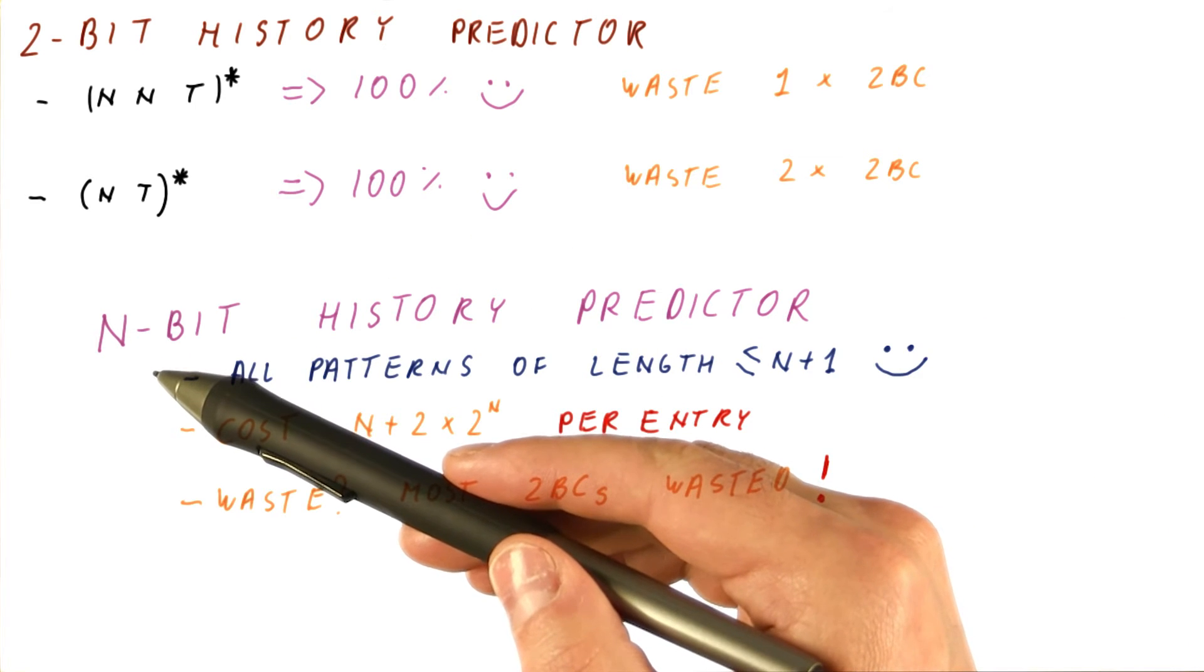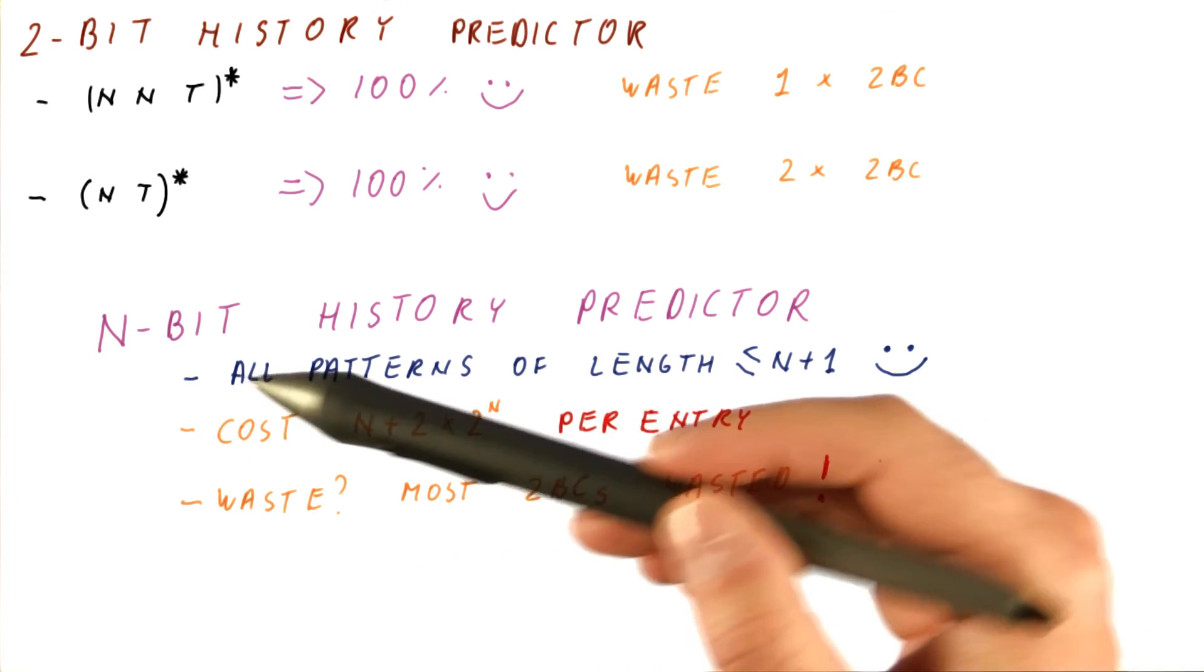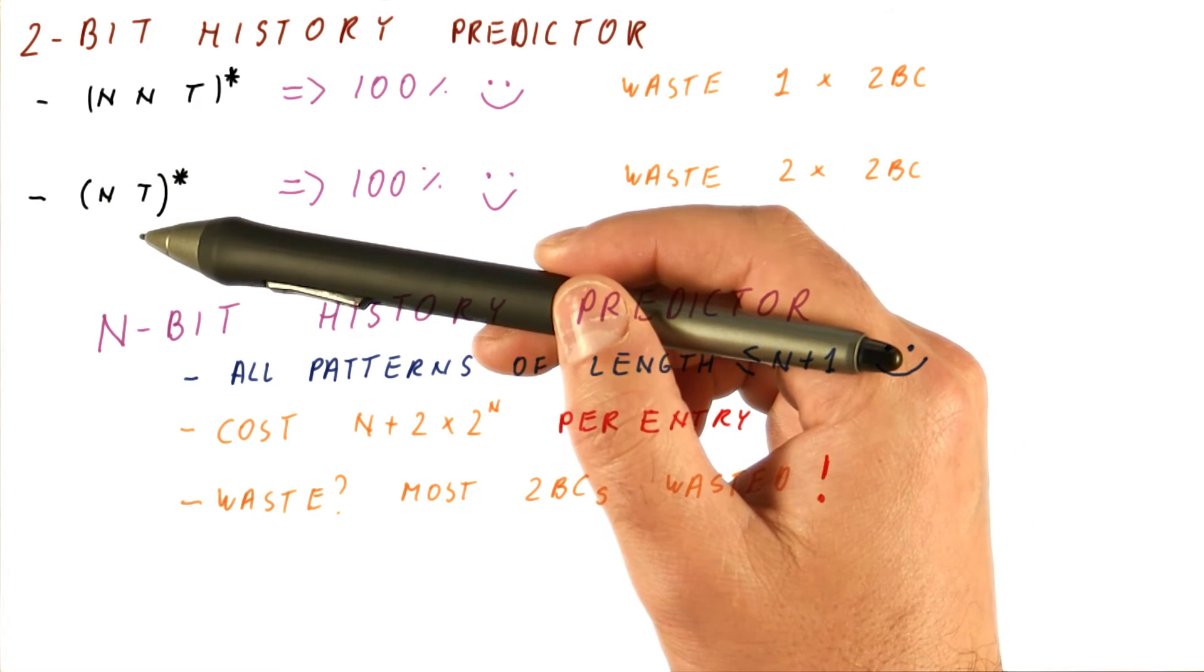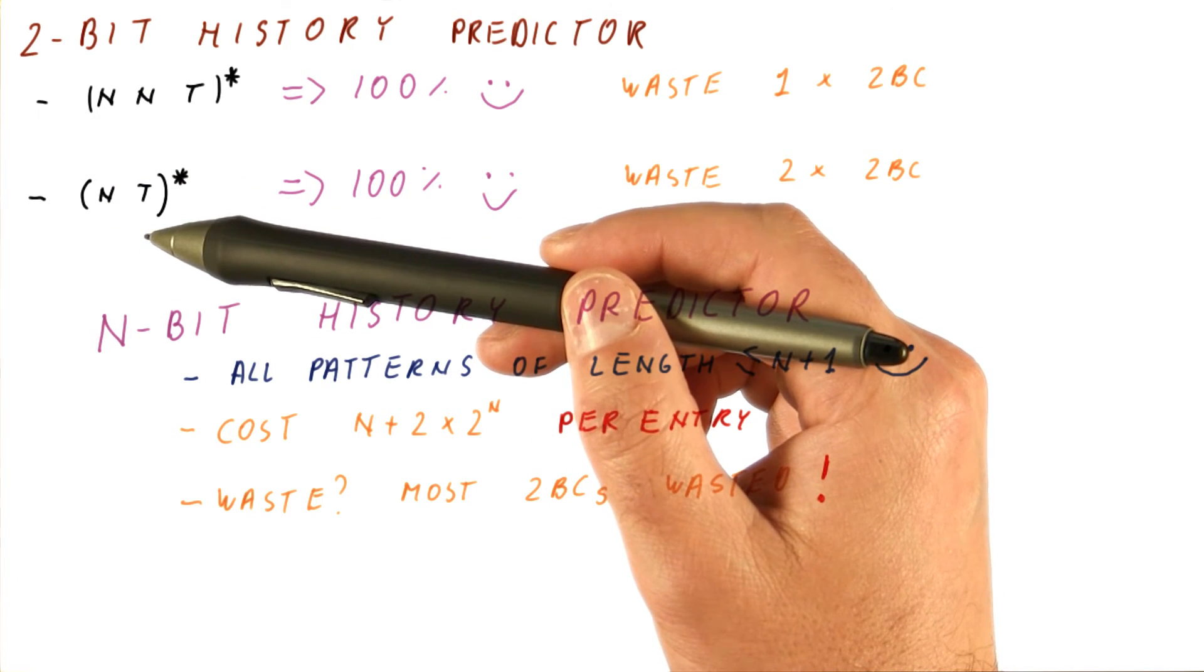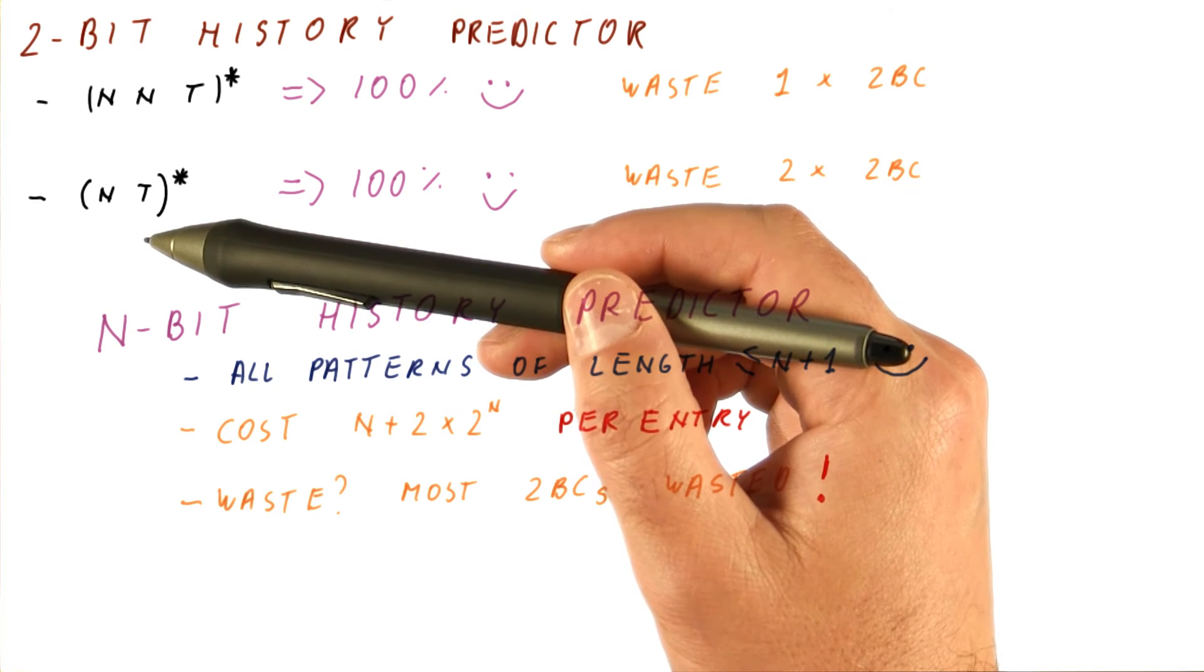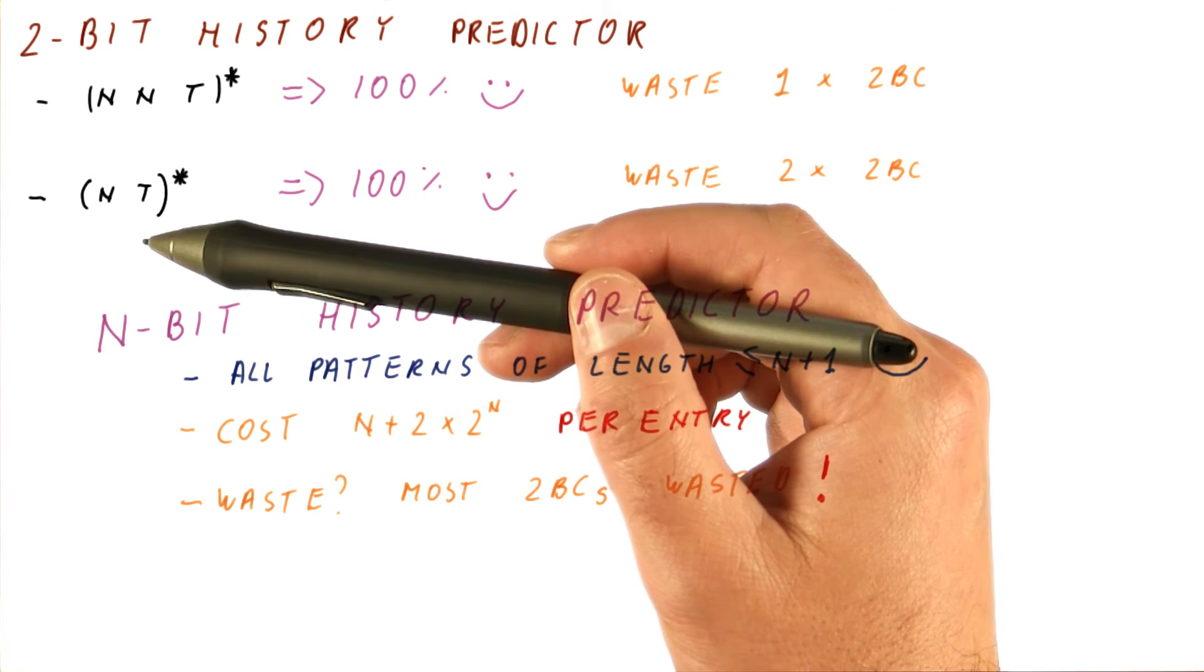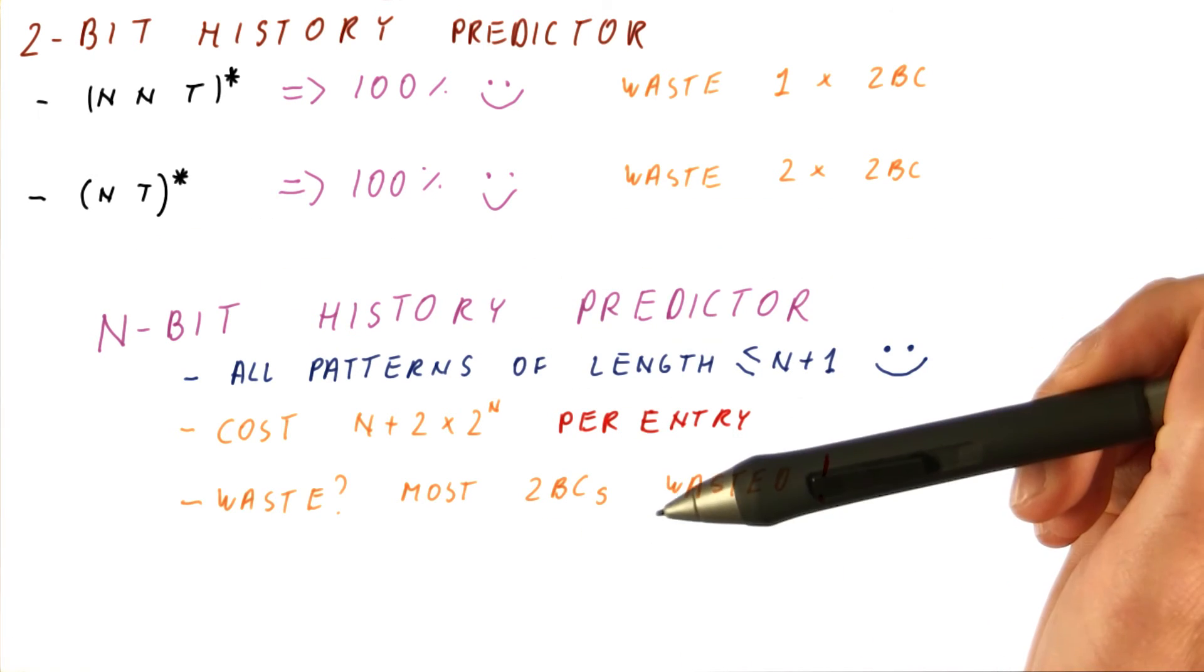There are 1,024 entries. We can only predict patterns that are up to 11 in length. And a pattern of length 11 will have 11 possible histories at most. So of the more than 1,000 histories, we will really be using only up to 11 of them for accurate prediction. The rest of the histories are mainly waste.